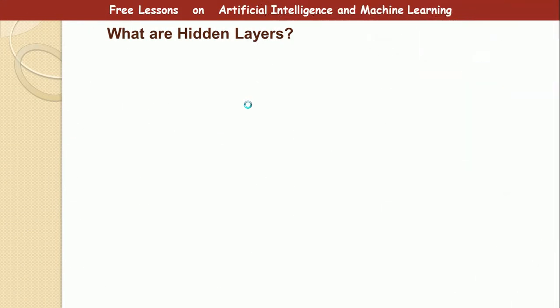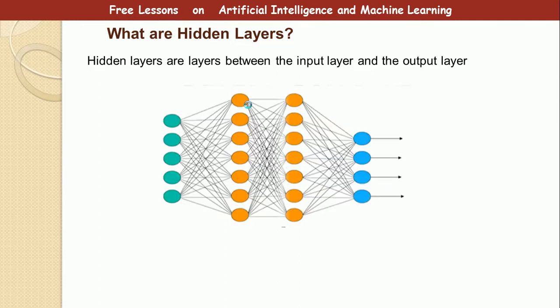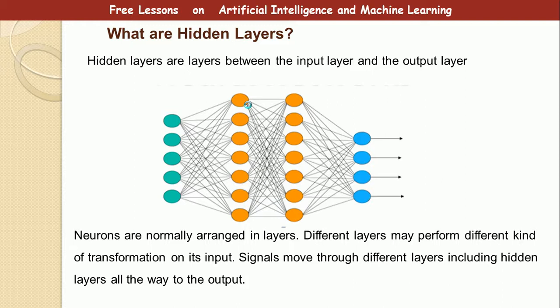Now, what are hidden layers? If you've learned about neural networks before, you must have heard about hidden layers. Hidden layers are layers between the input layer and the output layer. So, as you can see in the diagram, the orange colored layer or the orange colored set of neurons represents the hidden layer. The light green layer represents the input layer and the blue layer represents the output layer. So, neurons are normally arranged in layers. Layers are not limited to two or three. There can be so many layers from one to as much as possible. And different layers may perform different kinds of transformations on its input.